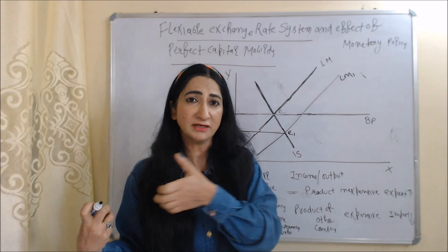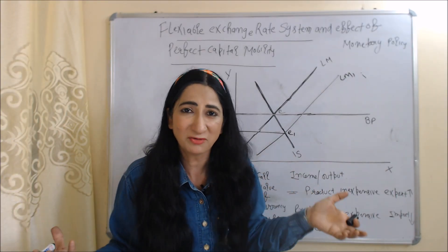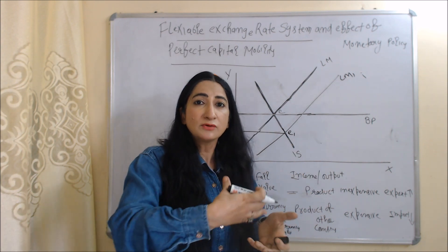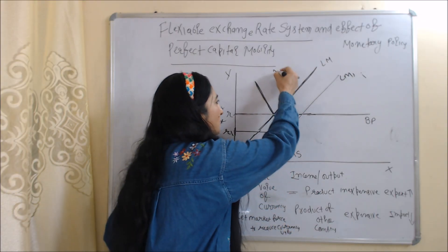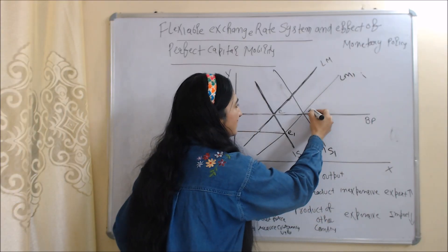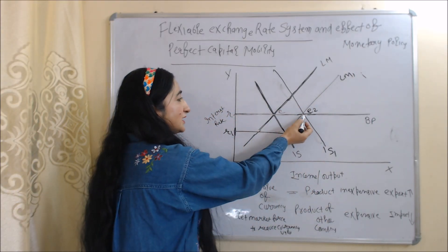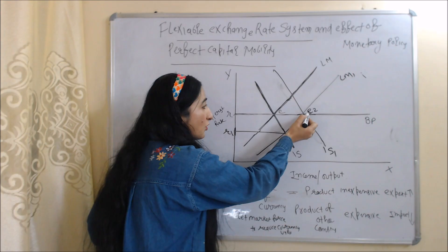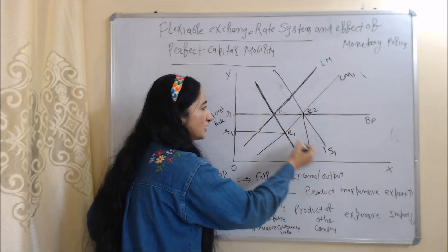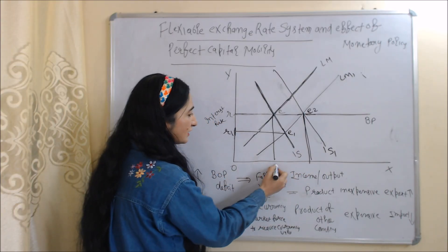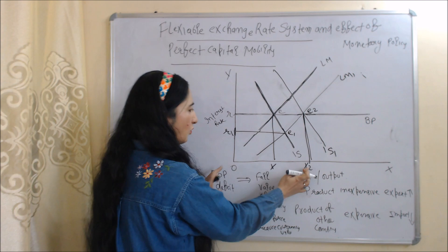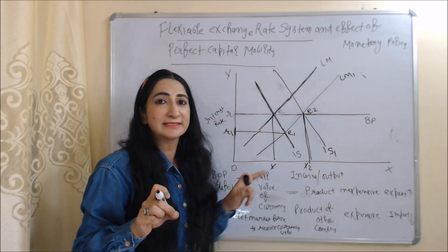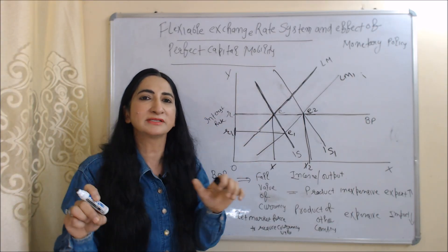As exports keep increasing, more money is coming into our country, which is good for growth. Investment, saving, and consumption all increase, influencing goods market equilibrium. As a result, our IS curve shifts from IS to IS1, and our new equilibrium point is E2. Comparing E2 to the original equilibrium point E, we can see national income is more at E2 (OY2) compared to E (OY). So we can say that under the flexible exchange rate system, our monetary policy is very effective.